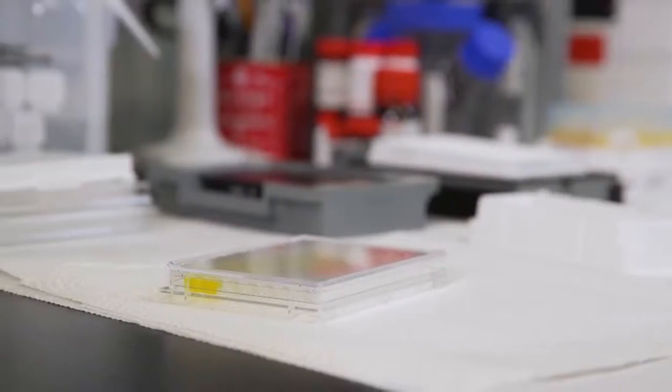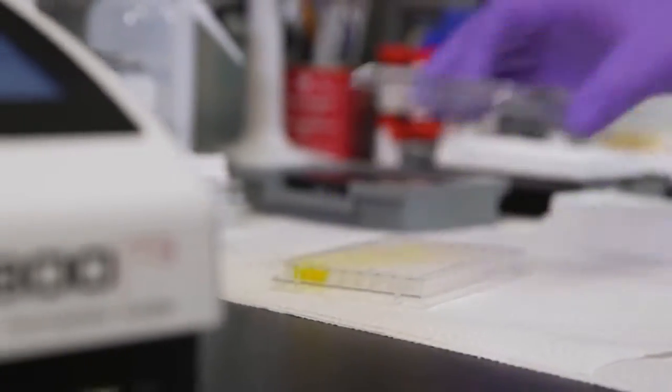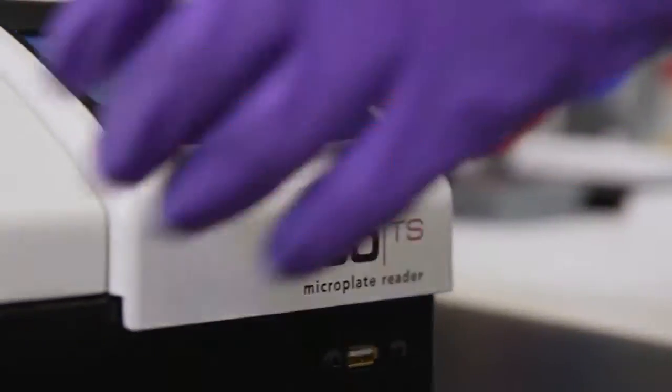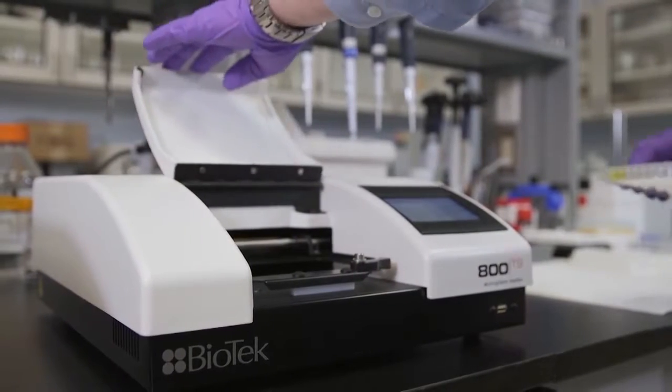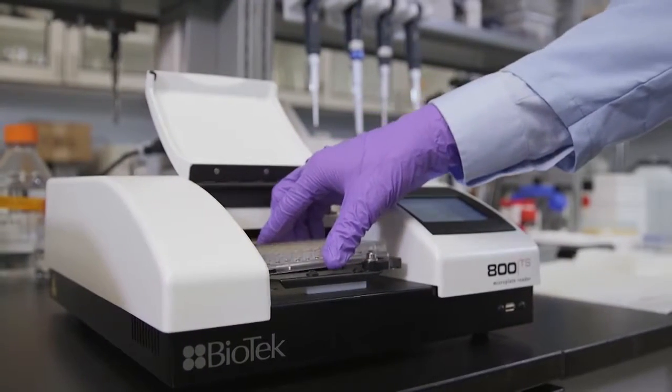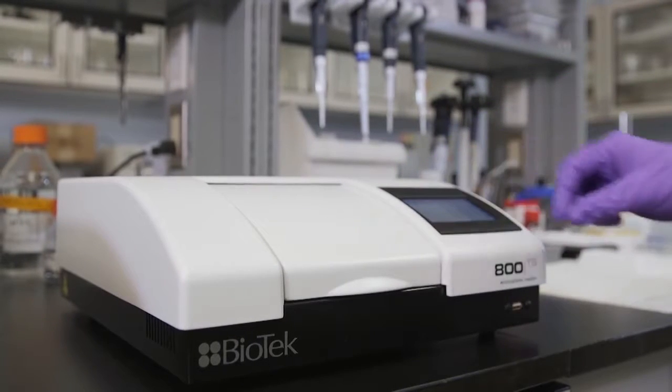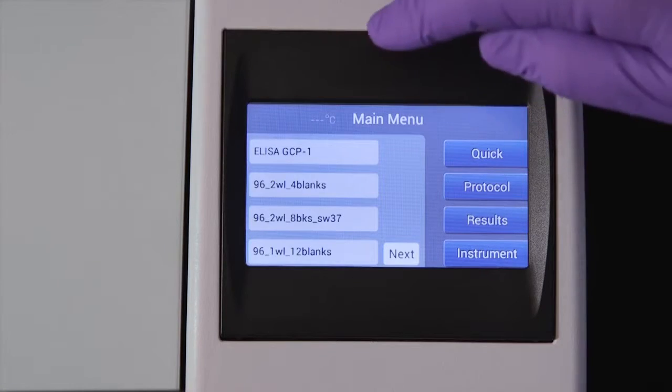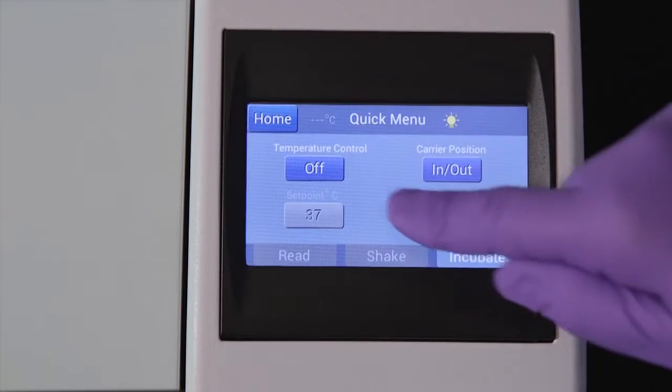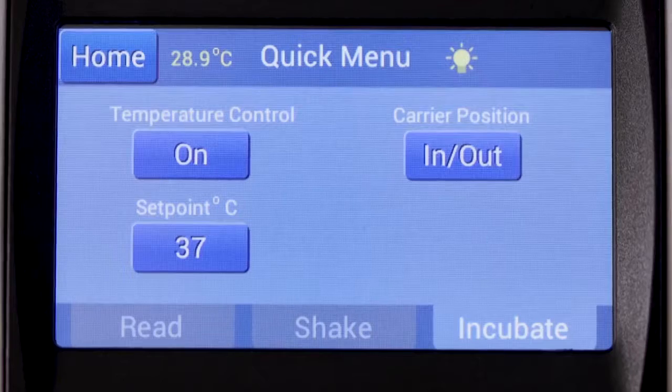With a 340 to 750 nanometer wavelength range, the 800 TS is ideal for a variety of applications including ELISA, protein, and other endpoint protocols. Incubation and shaking expand the reach to enzyme kinetics and cell-based assays.